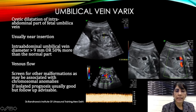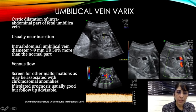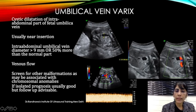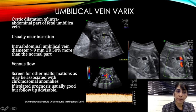What do we do next? We measure the maximally dilated area. If the measurement is more than 9 mm, that is significant. Alternatively, you can compare it with the normal part of the umbilical vein — the varix would be more than 50% dilated compared to the normal part of the vein.